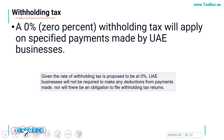At present withholding tax is zero percent, so UAE companies will not be deducting any amount from their supplier bills and there will not be any obligation to file a withholding tax return. In a typical scenario when we are supplying to Saudi Arabia from UAE, Saudi companies are required to withhold a certain percentage from our payment and deposit it with the Saudi authorities. But at present here in UAE we do not have any such requirement.